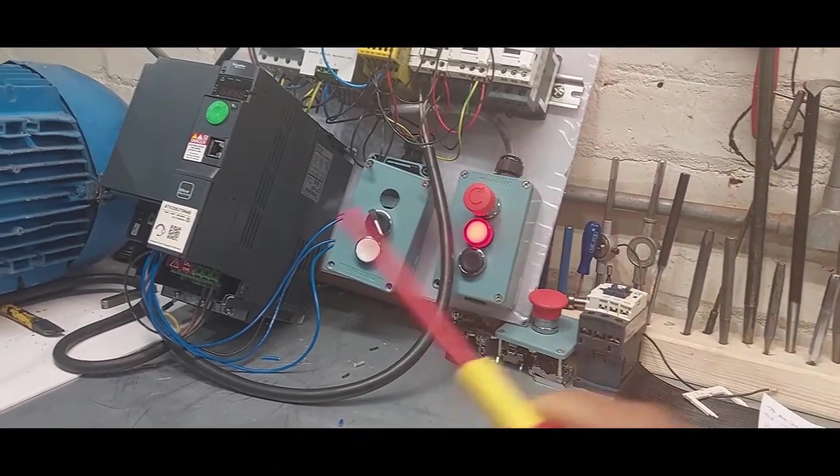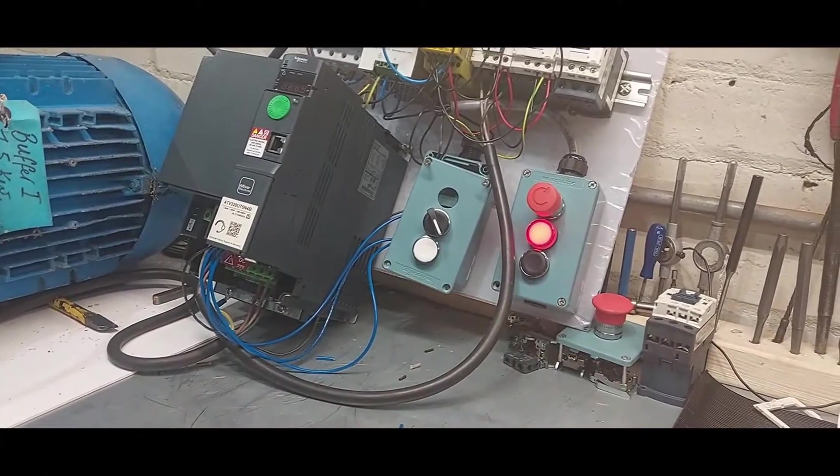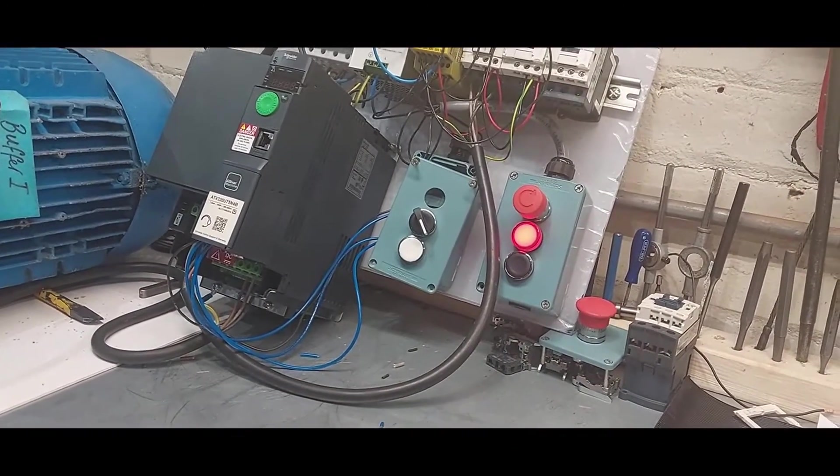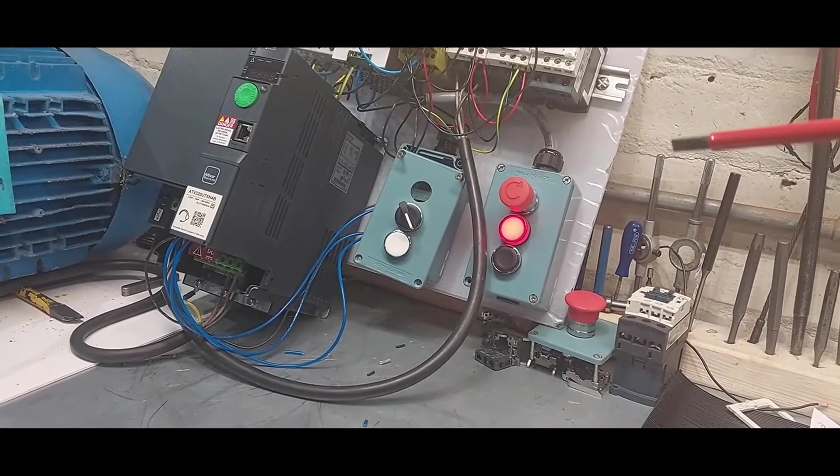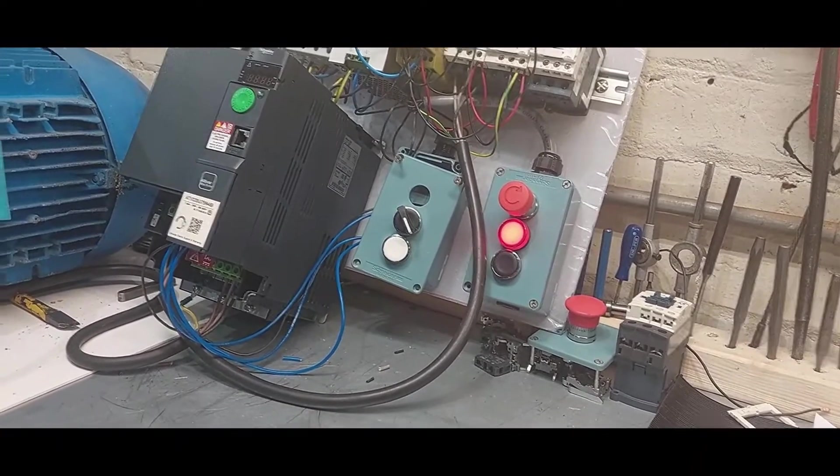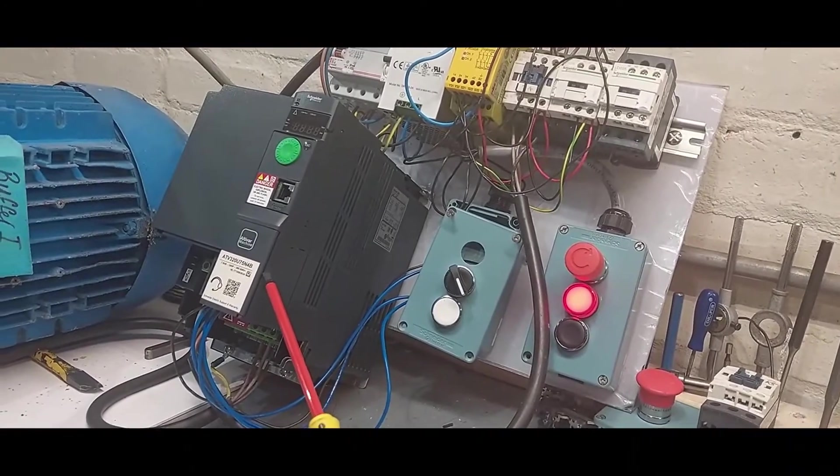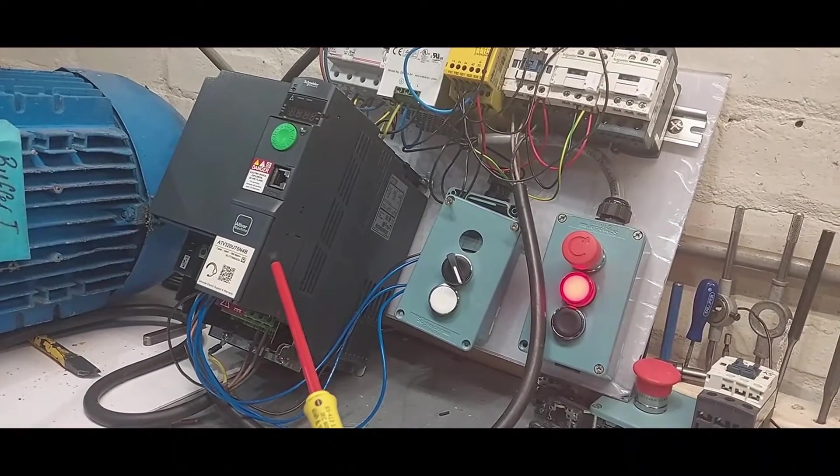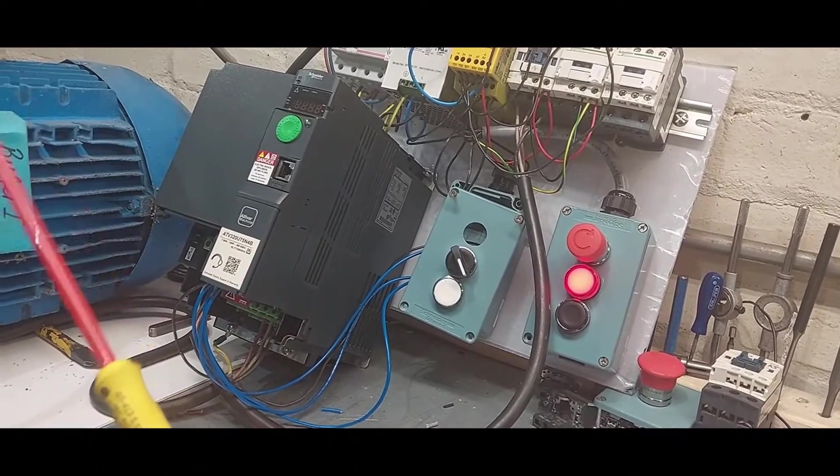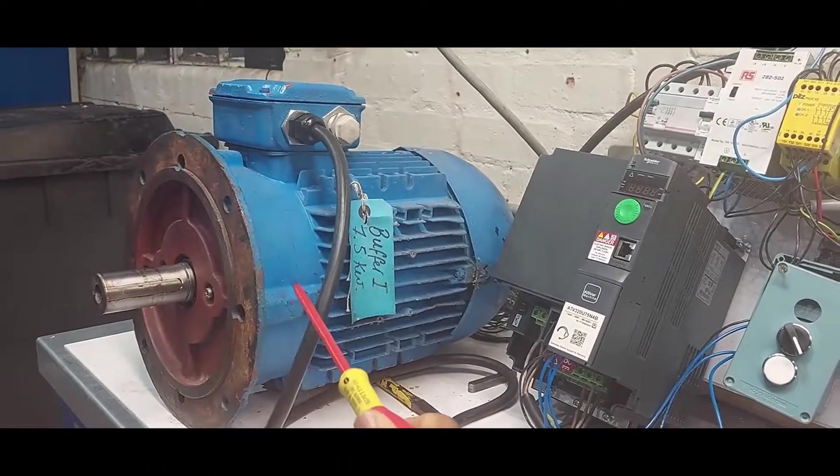Other control devices that we have here are the inverter. This is a frequency variator. The job of this frequency variator is to control this electrical motor right here.